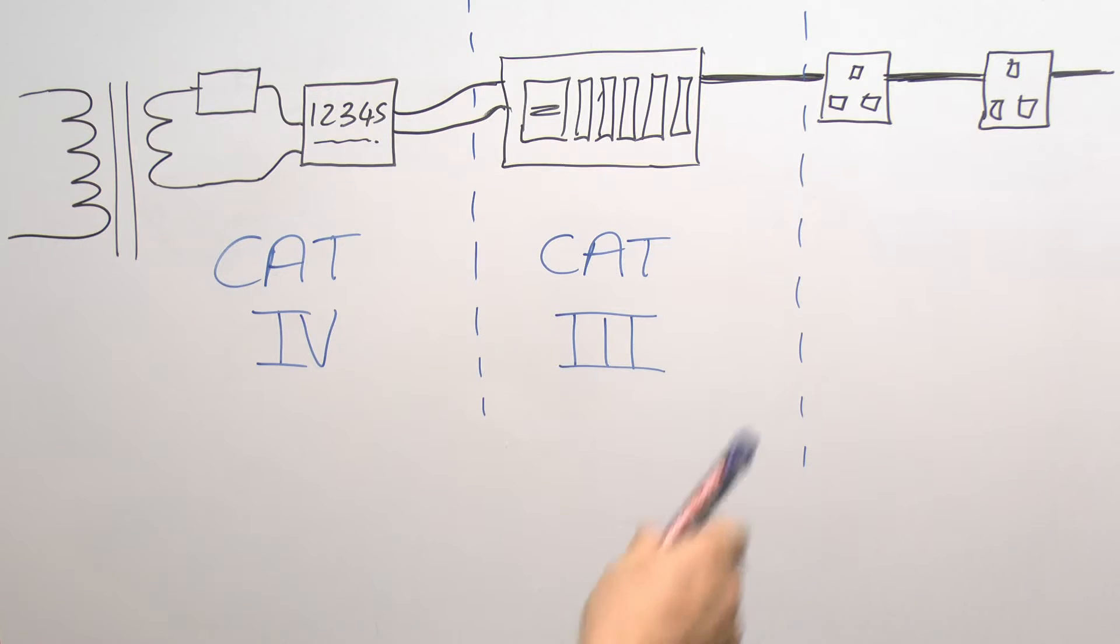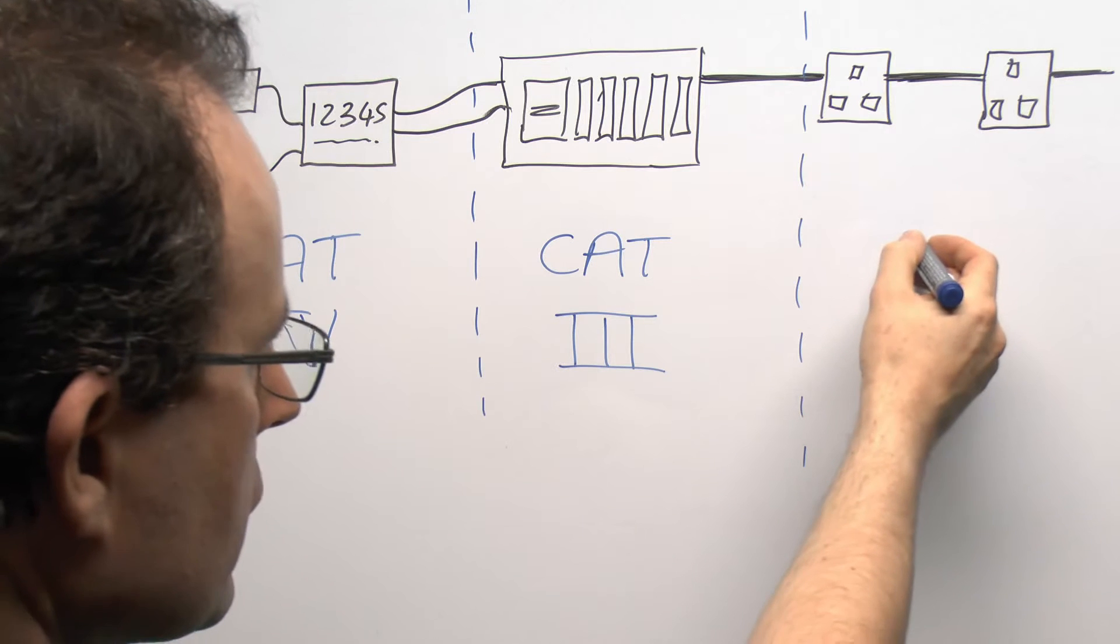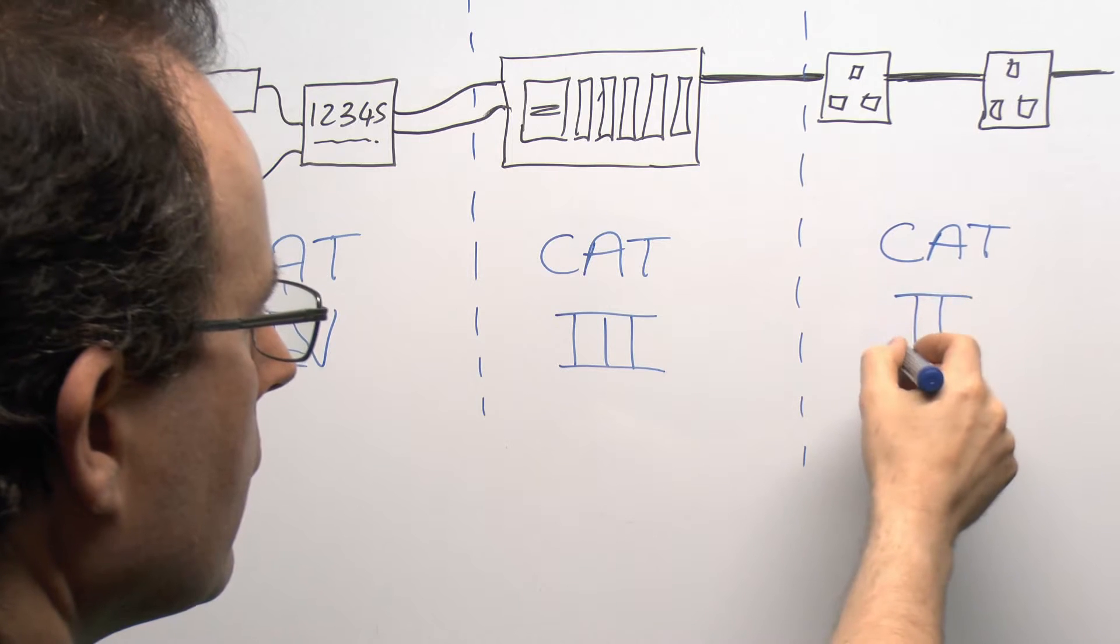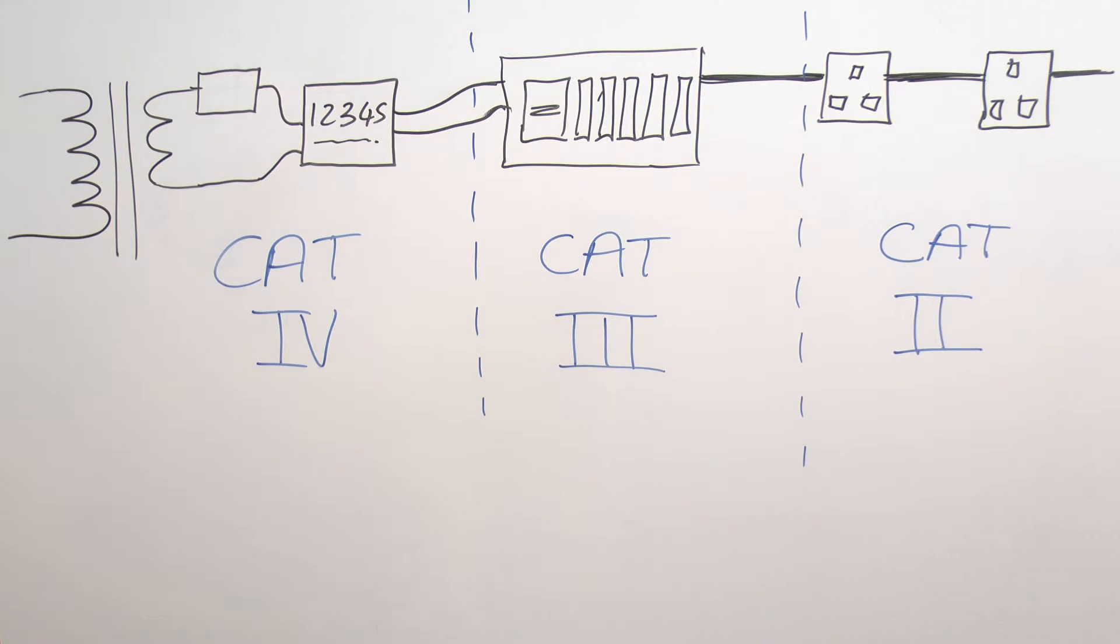And then of course further down the line you're going to have your individual circuits. So you may have socket outlets or lighting circuits or whatever else. And in those situations that's going to be a category 2. And again as with the others you're now much further away from the source of the energy here. So again the impedance is going to be considerably greater. And again the fault current there will be less than here and of course less than here. So as you're moving away from the source of the supply the impedance increases and the fault current of course will decrease. And of course then correspondingly the risk to actually anyone testing things there is reduced as well.